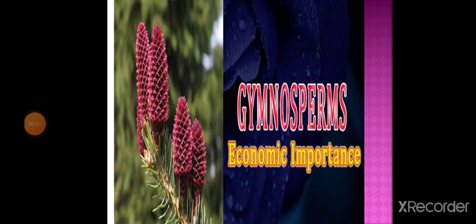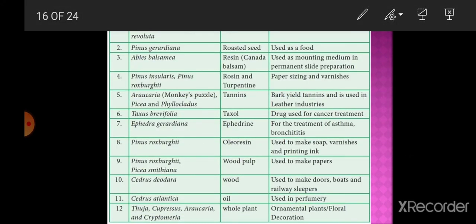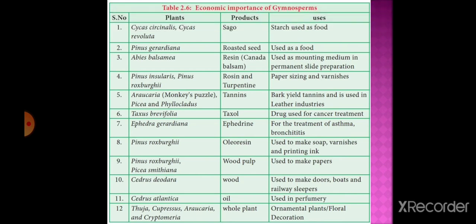Now let us discuss the economic importance of gymnosperms. Cycas circinalis and Cycas revoluta produce sago - a powdered starch used as food. Pinus gerardiana seeds are roasted and edible, used as food. From Abies balsamea, the product obtained is resin commonly called Canada balsam.